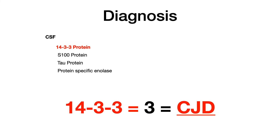Unfortunately, there is no cure or treatment for CJD. If somebody is diagnosed, they typically die within about the following year. Current treatment guidelines are supportive and palliative. Remember the mnemonic: CJD means three — so if you see 'three' (triphasic EEG, 14-3-3 protein), think CJD.